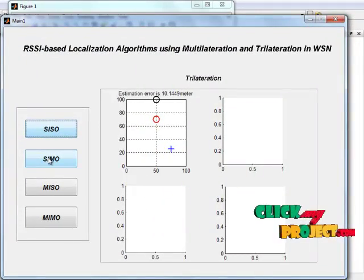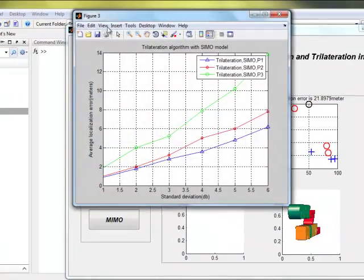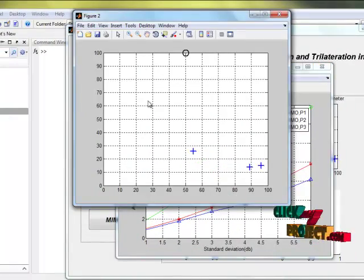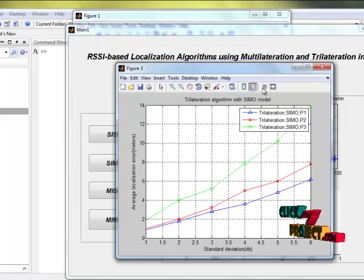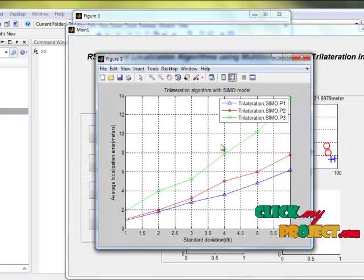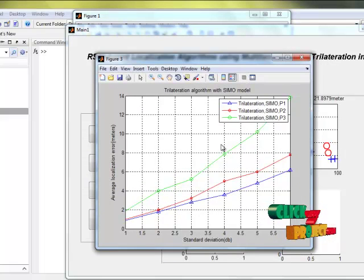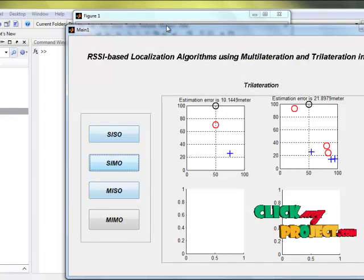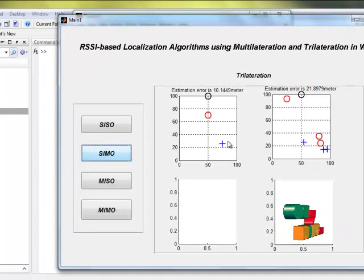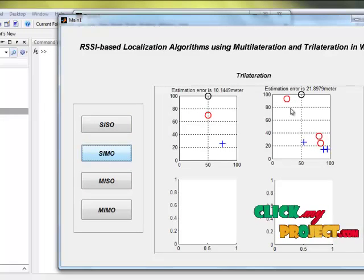Next, single input with multi output. Here single input with multi output and compare them with SISO model. This is the anchor node, this is the mobile node. Here is the location of the mobile nodes are estimated.